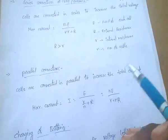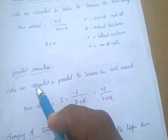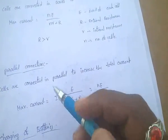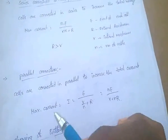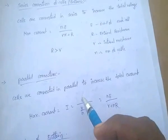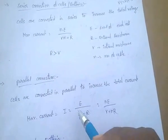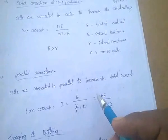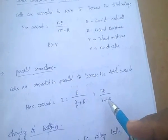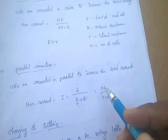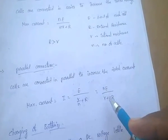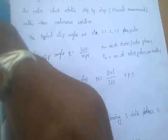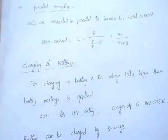In parallel connection, cells are connected in parallel to increase the total current. In this case, the maximum current I equals E divided by (r/N) plus R, that is N×E divided by (r + N×R), where r is the internal resistance and R is the external resistance.